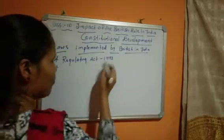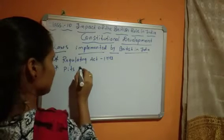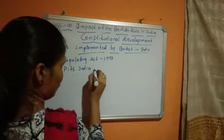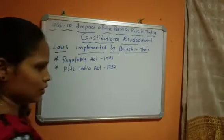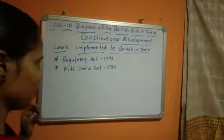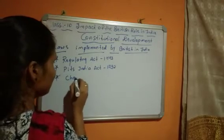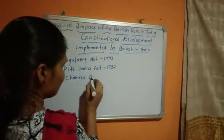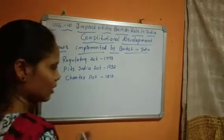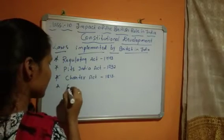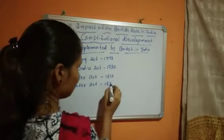The Regulating Act of 1773. Act is also called a law. The second act is the Pitt's India Act of 1784. The third act is the Charter Act.